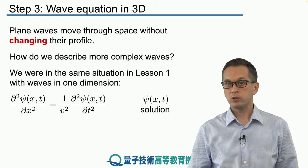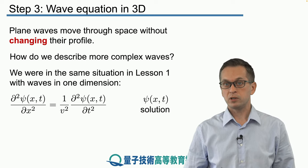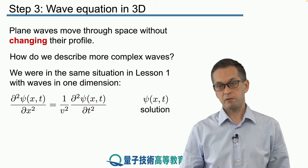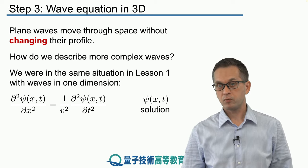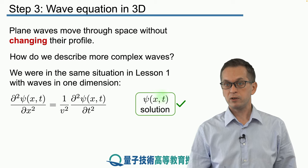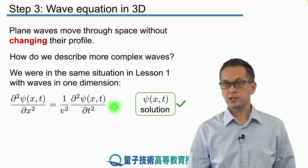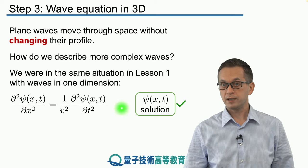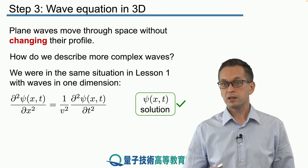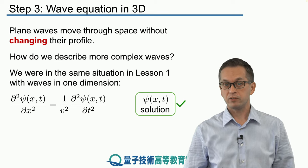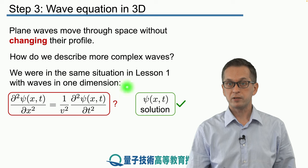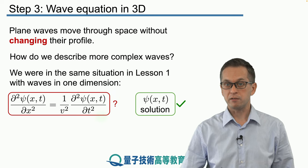So now what do we do about three-dimensional waves? How does the wave equation look in three dimensions? We're going to use the same approach and say that whenever we have some three-dimensional wave function that satisfies the wave equation, that's a valid wave. The question is: what is the wave equation in three dimensions?